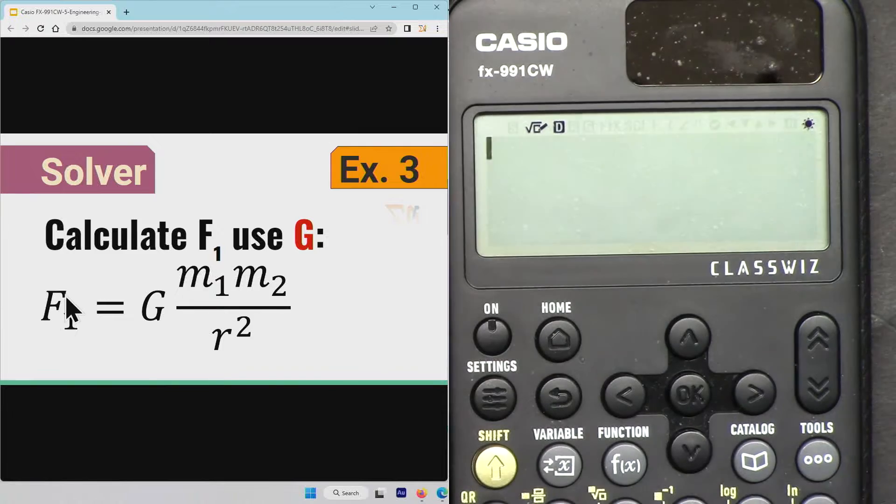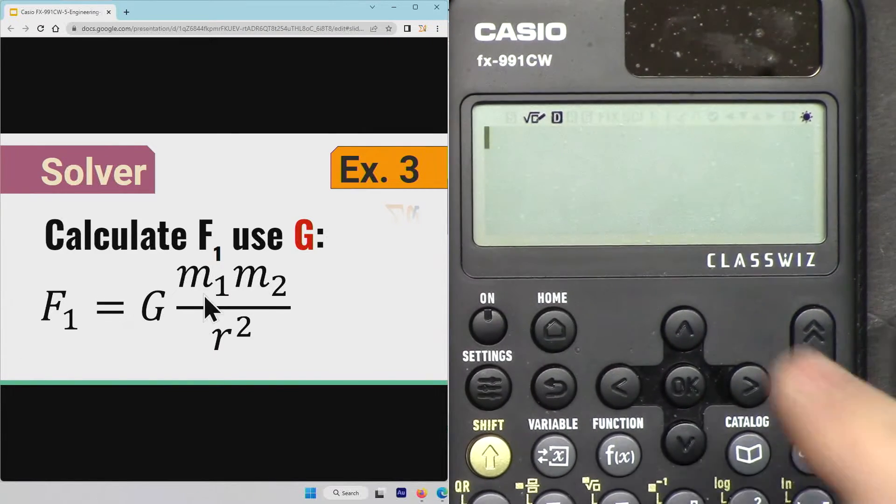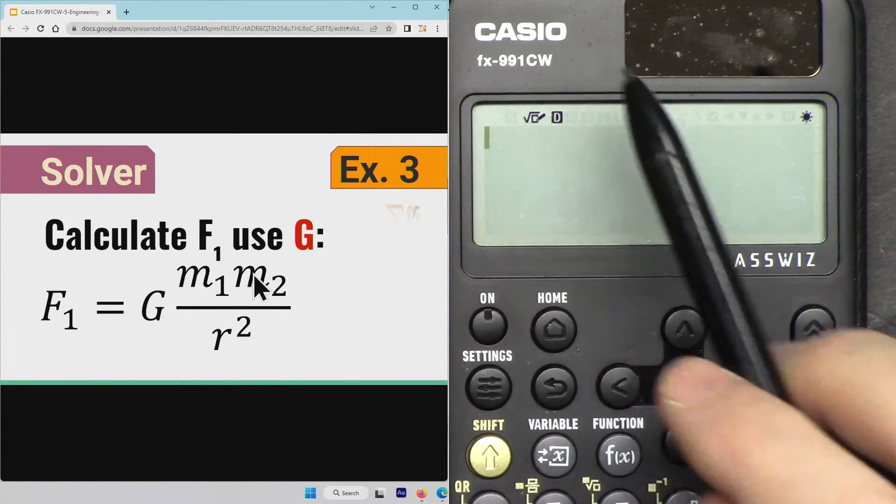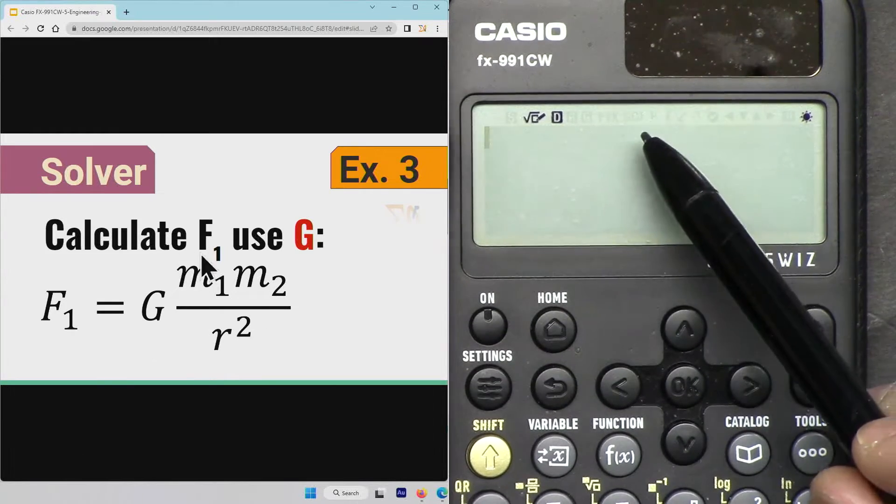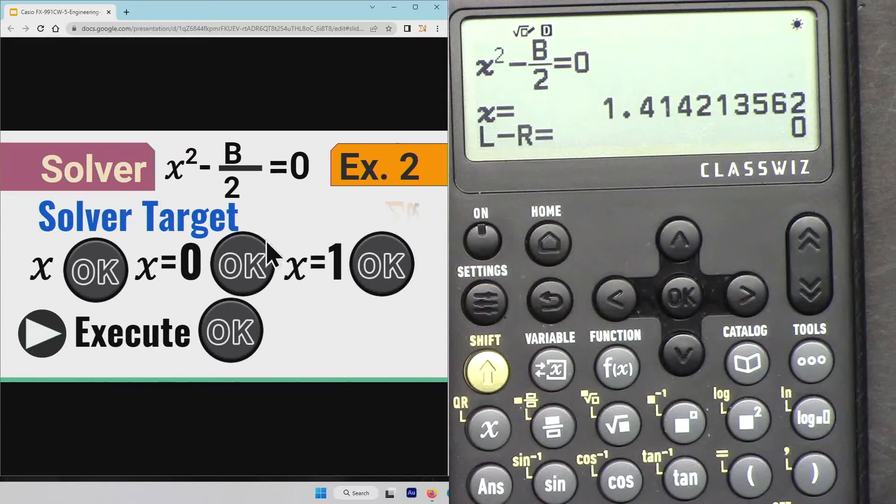Hi, welcome to a calculator tutorial from Equator. My name is Ahmad Shamshiri. In this video we are going to see how we can use Casio FX-991CW and Casio FX-570CW scientific calculator to use solver function to solve for x.